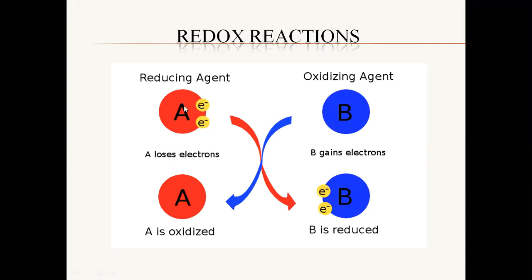Now these two molecules — let's suppose they are involved in a reaction. There is a lose or gain of electrons. This substance has lost its electrons. Oxidation is the loss of electrons. When this substance is going to lose its electrons, it is going to be oxidized. It will be oxidized.